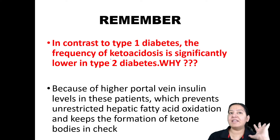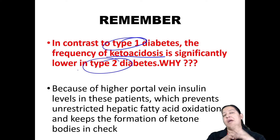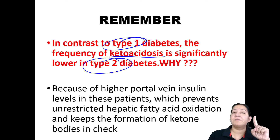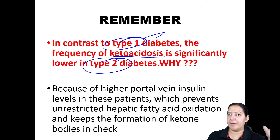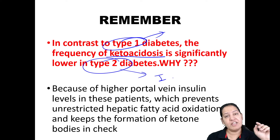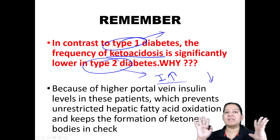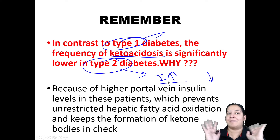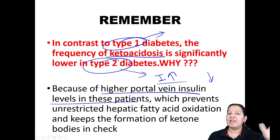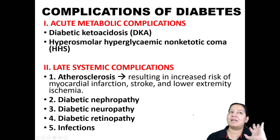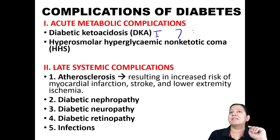Why is DKA more common in type 1 compared to type 2? In type 1, insulin is absent or severely deficient. In type 2, insulin is never zero — initially it increases in the honeymoon period, then decreases as beta cells exhaust. Because insulin is never absent in type 2, and because of high portal vein insulin levels, oxidation of free fatty acids in the liver does not take place — so ketone bodies are not formed.